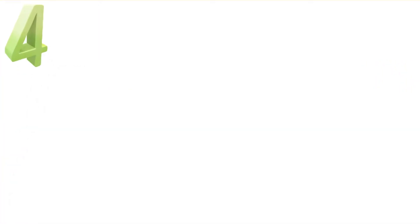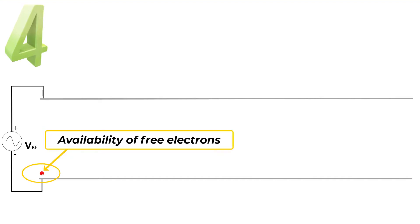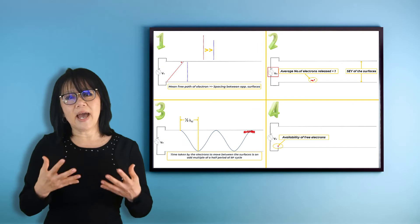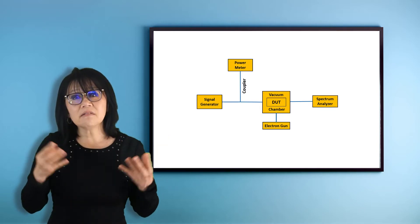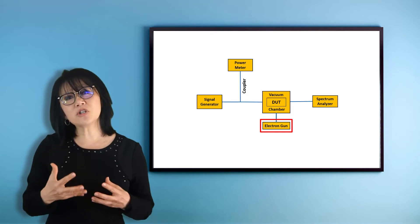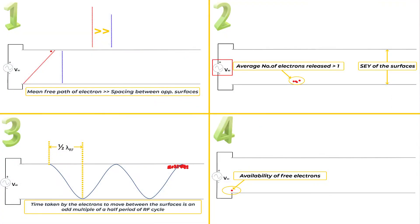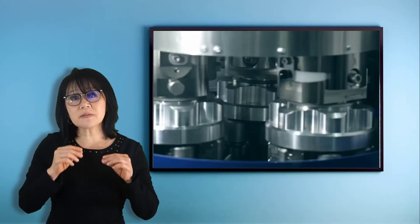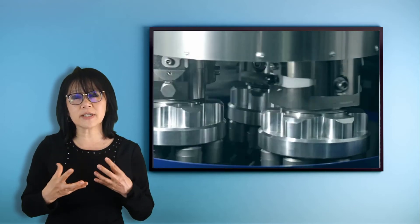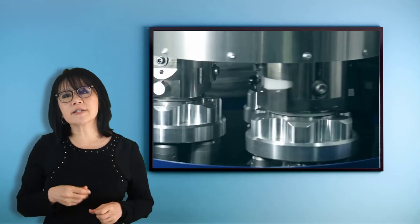The fourth condition: there must be an availability of free electrons at the start to initiate that secondary electron effect. In space, electrons are released from the surface by high energy particles. During ground testing, you have to provide a source — a radioactive source such as Strontium-90 or an electron gun. It's always a good assumption to have some sort of electron source. All four of these conditions must be met for multipaction to occur. Also note that the surface materials used in the design, including the plating and any impurities from manufacturing, also play a role in causing multipaction.